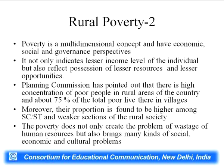The Planning Commission has pointed out that there is a high concentration of poor people in the rural areas of the country — about 75 percent of the total poor, i.e., about three-fourths of the population living below the poverty line, reside in villages. Moreover, the proportion of poor is found to be higher among Scheduled Castes, Scheduled Tribes, and weaker sections of society. Poverty not only creates the problem of wastage of human resources but also brings many kinds of social, economic, and cultural problems.